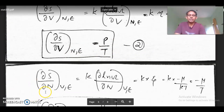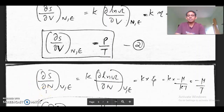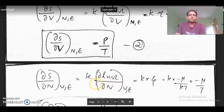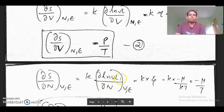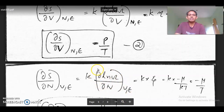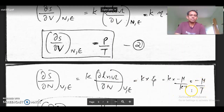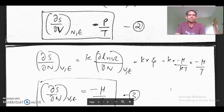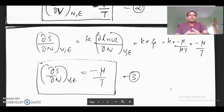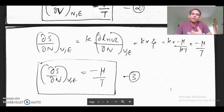Then we take ∂S/∂N — the partial derivative of entropy with respect to number of particles, keeping volume and energy constant. This equals k times ∂(log omega)/∂N at constant V and E. This quantity is theta, and theta is minus mu (chemical potential) over kT. So ∂S/∂N equals minus mu/T, and one can determine the chemical potential once entropy is known.